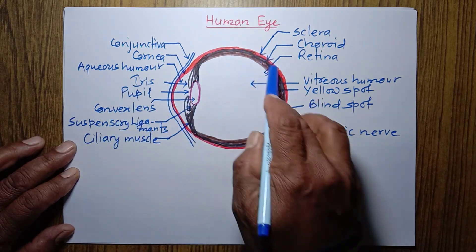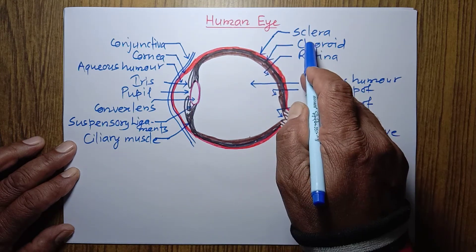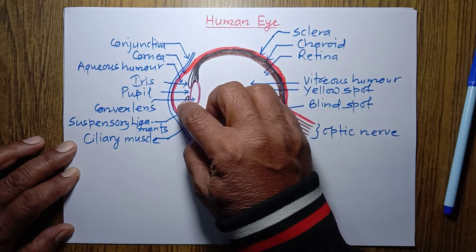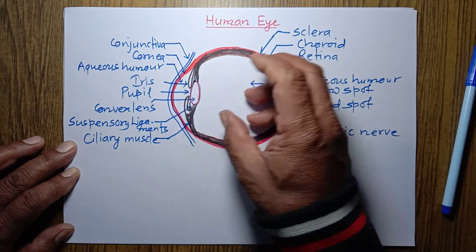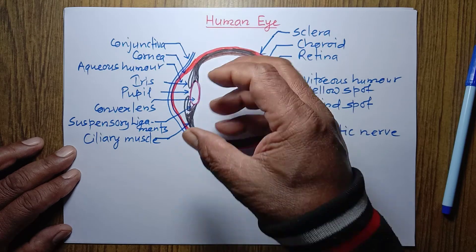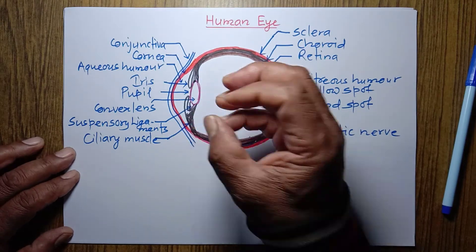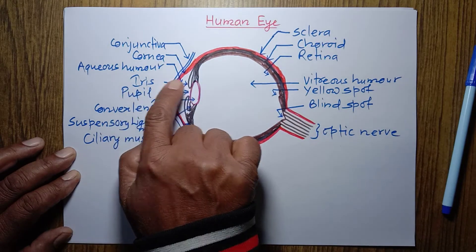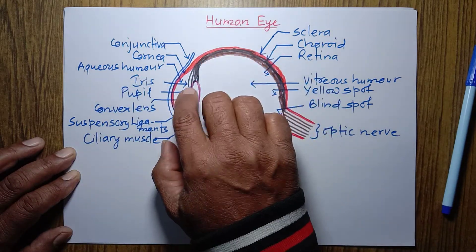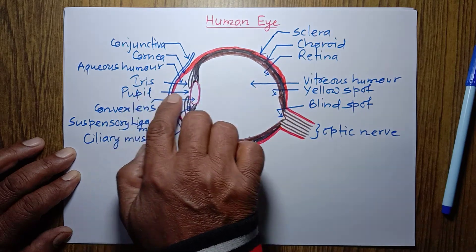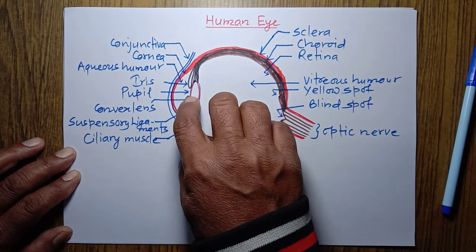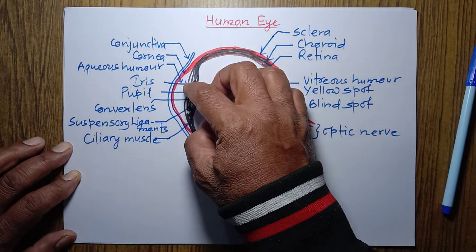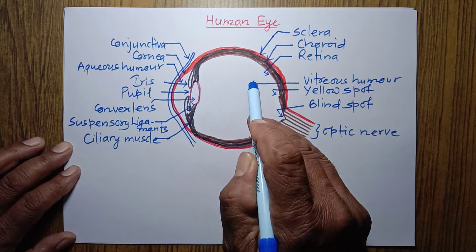Iris — the middle layer of our eyeball, which is the choroid coat, forms an annular structure in the front side of our eye. It is a colorful, annular, and opaque structure. If light falls on the iris, it cannot enter into the eye. But if light falls in the middle part of the iris — through the pupil — it can enter into the eye. That's why the pupil is the entrance for light.